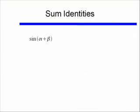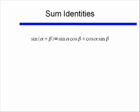Let's start off with the sum identity for sine. If I have sine of alpha plus beta, this is equal to sine of alpha times cosine of beta, plus cosine of alpha times sine of beta.